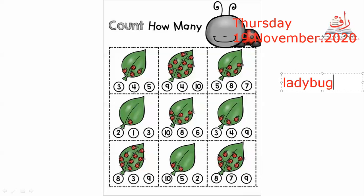So this is a ladybug. We're going to count the ladybugs on the leaf, then make a circle or click the correct answer. Let's count starting from picture number one: one, two, three, four. I'm going to put true for number four — true!